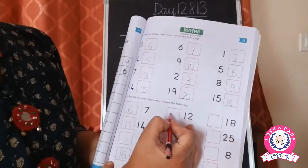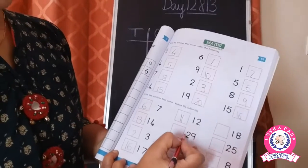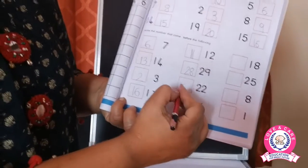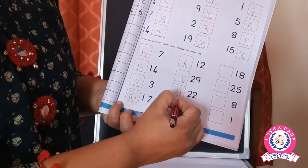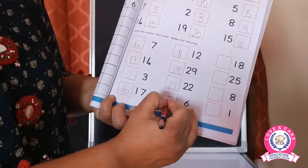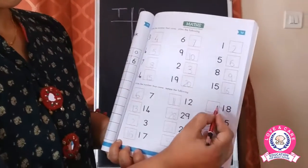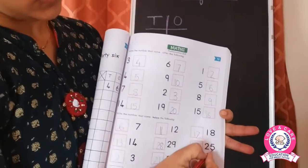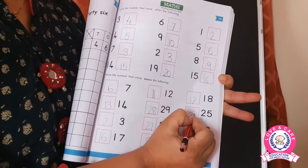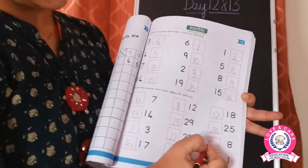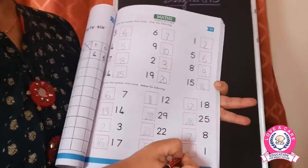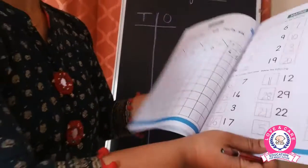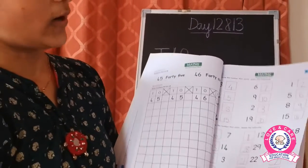Twelve, so the before number will be eleven. Twenty-nine, so the before number is twenty-eight. Twenty-two, so the before number is twenty-one. Six, so the before number is five. Eighteen, so the before number is seventeen. Twenty-five, so the before number is twenty-four. Eight, so the before number is seven. One, so the before number is zero. So with this we have completed the concept of after and before.